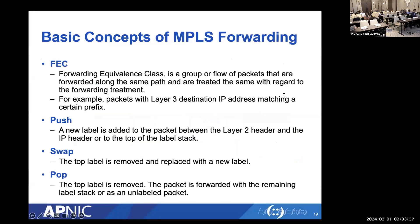A Forwarding Equivalence Class (FEC) is a group of packets forwarded along the same path and treated the same way — for example, packets matching the same destination prefix. There are three possible label operations at an LSR: Push — adding an MPLS label to a packet; Swap — replacing the topmost label with a new one; and Pop — removing the topmost label.